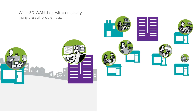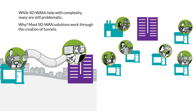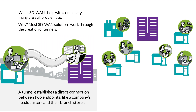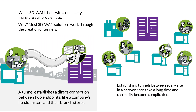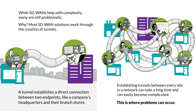While SD-WANs help with complexity, many are still problematic. Why? Most SD-WAN solutions work through the creation of tunnels. A tunnel establishes a direct connection between two endpoints, like a company's headquarters and their branch stores. Establishing tunnels between every site in a network can take a long time, and can easily become complicated. This is where problems can occur.